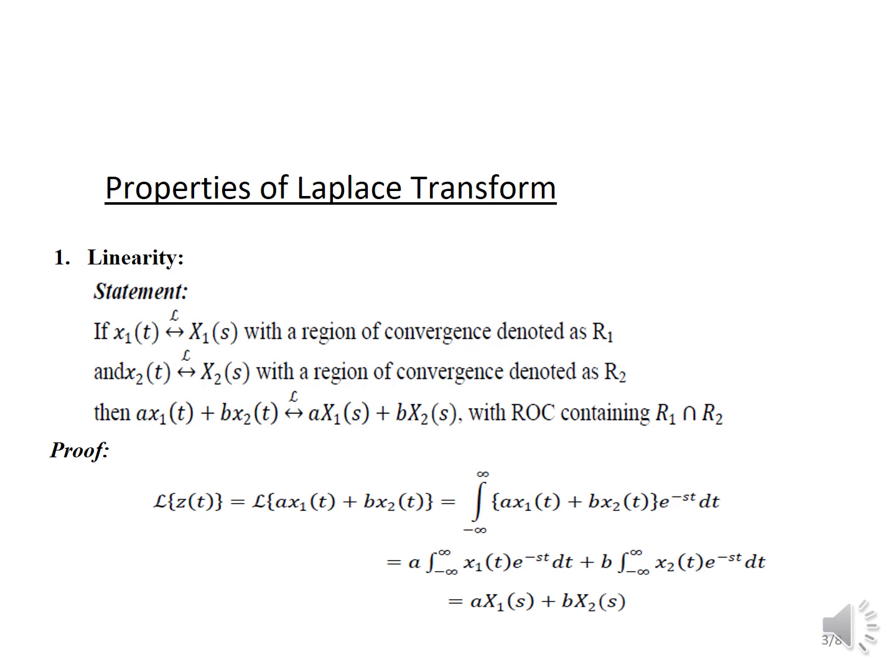Let us prove this. We take the Laplace transform of Z(t) using the standard formula. Since we have two terms, we split the integral into two terms and take the constants A and B outside. Applying the standard formula to each term, we obtain A·X1(s) + B·X2(s), which proves the linearity property.